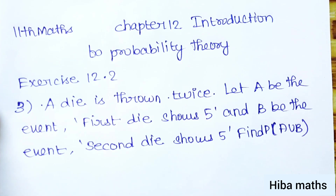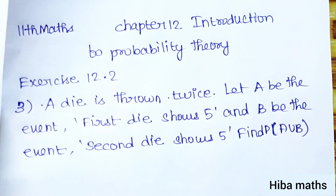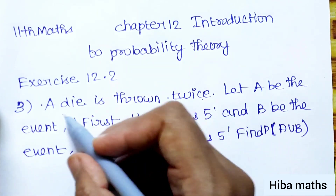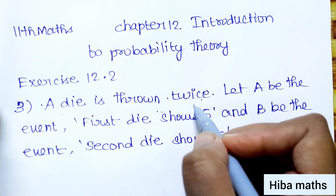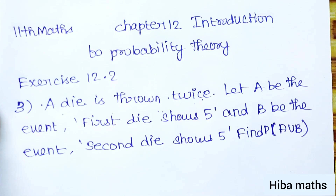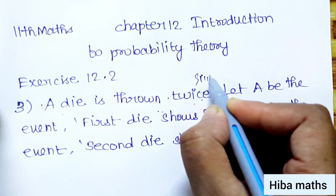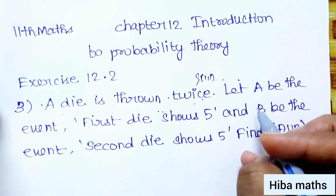Hello students, welcome to Hubermax 11 Standard Max Chapter 12, Introduction to Probability Theory, Exercise 12.2, third question. A die is thrown twice. If we take the sample space, it goes from 1,1 up to 6,6.